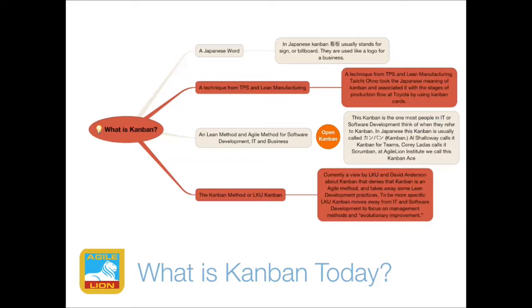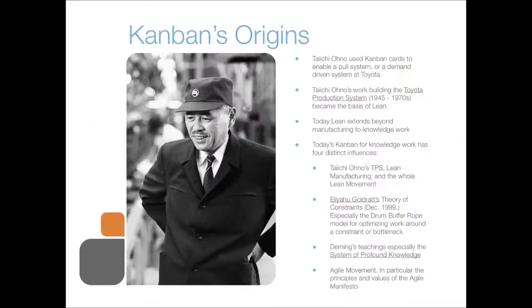Now let's talk about Kanban's origins. The gentleman on the left is Taiichi Ohno at a factory at Toyota — the genius behind Kanban in Japan. For him it was a system to ensure that anything manufactured really had demand. At Toyota, Kanbans were physical cards and sometimes physical tokens that would represent demand coming from a part of the production process. The key part was that demand came directly from the customer — if you're going to make a hundred cars, you first demand 400 tires, 100 engines, and so forth.